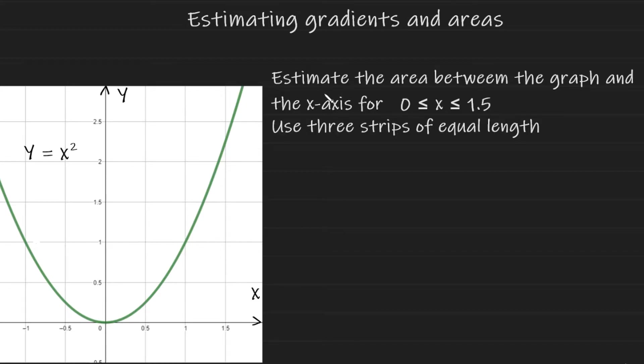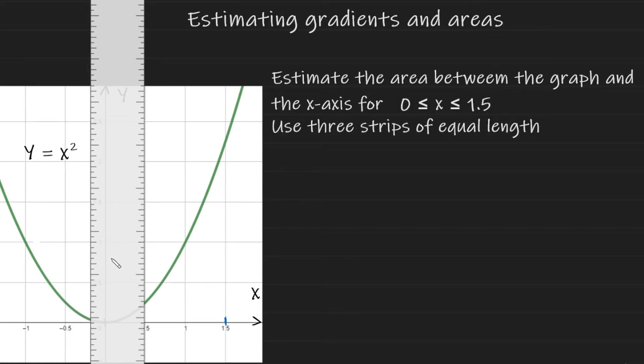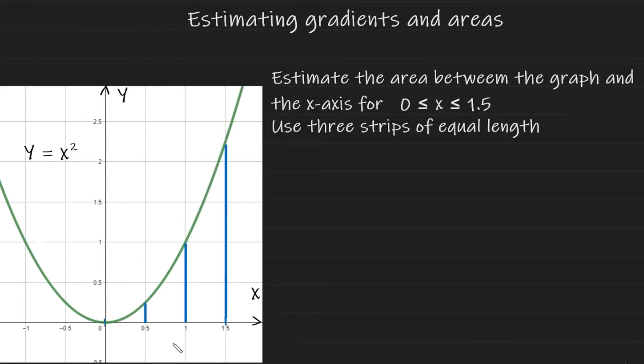Okay. Let's take a look at this example. Now we are asked to estimate the area between the graph and the x-axis. So between the graph and the x-axis for x is between 0 and 1.5. And that's how you'd read this. X is between 0 and 1.5. So x is between here and 1.5. Use three strips of equal length. So what does it mean to use three strips of equal length? Well, on our graph between 0 and 1.5 for x, we need to draw three vertical lines that are an equal distance apart. So it's going to look like this. We're going to grab our ruler and begin drawing vertical lines between the graph and the x-axis at 0.5, 1 and 1.5. And as you can see, if you've done this correctly, you should have three strips. And these are the strips, these areas here.